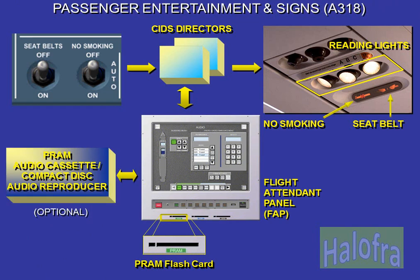On the A318, the FAP audio page provides controls and displays for the pre-recorded announcement and music, PRAM. The PRAM can be a flashcard type, directly plugged into the FAP. An audio cassette or compact disc audio reproducer, which was installed on the previous A320 family, can be optionally installed.